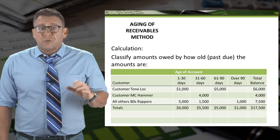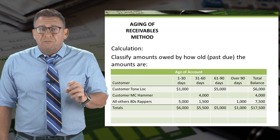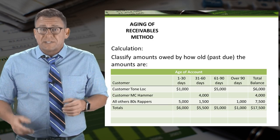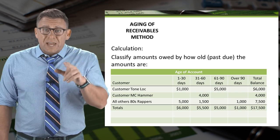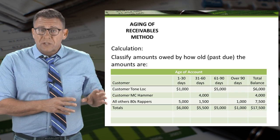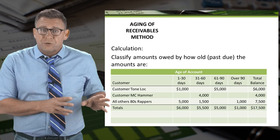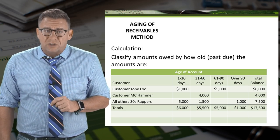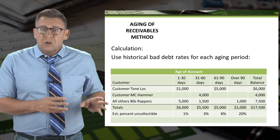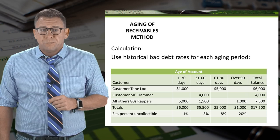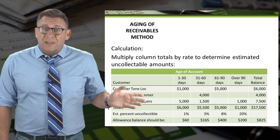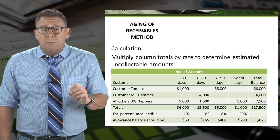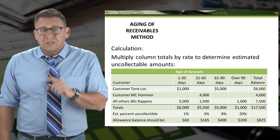Usually this method starts with a table. We age our invoices because the collectability of older accounts is less than recent accounts. In this example, you can see that the total amount of accounts receivable is $17,500, but we have classified that into four subtotals based on aging. Then we use historical bad debt rates for each of those aging columns, and multiply the aged column totals by the historical rate to determine how much of each classification we think we won't collect.